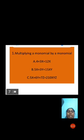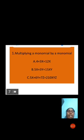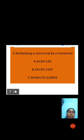Second example: 5x × 6y × 7z. Here we have three monomials being multiplied. In this, 5, 6, and 7 are constants and x, y, and z are different variables. First multiply the constants: 5 × 6 × 7 = 210. Therefore, 5x × 6y × 7z = 210xyz.